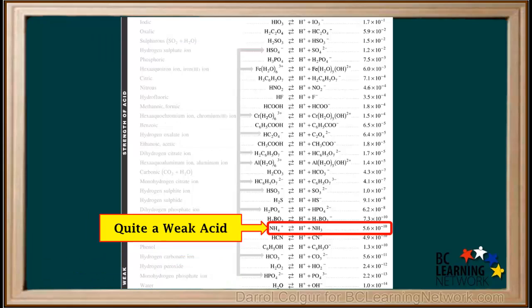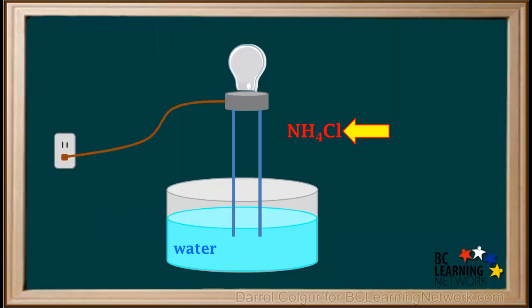Notice that the ammonium ion, NH4+, is low on the left side of the table, and its Ka value of 5.6 times 10 to the negative tenth is quite small. This means NH4+ is quite a weak acid. Because NH4+ is quite a weak acid, we might expect its conductivity to be weak. So let's try it. We'll set up a conductivity apparatus and add enough of the salt, NH4Cl, to produce a solution of 0.1 molar NH4Cl.